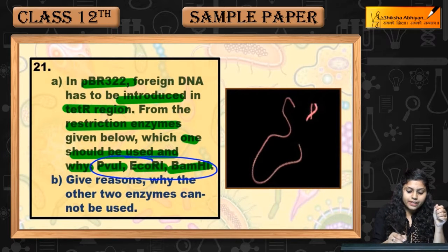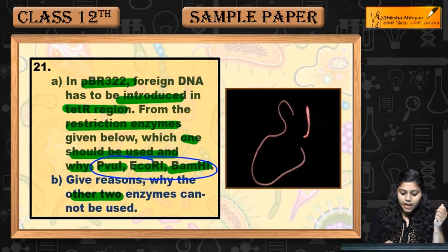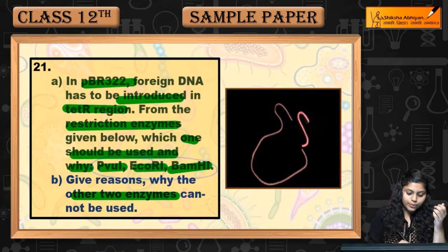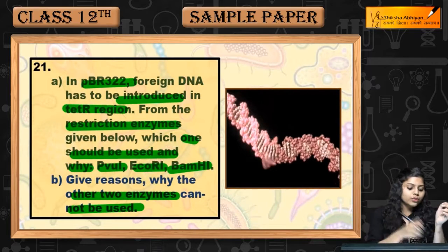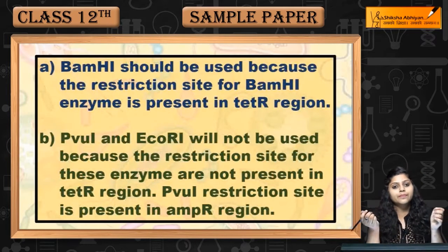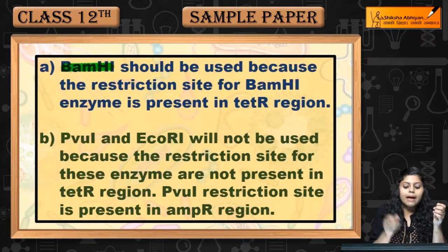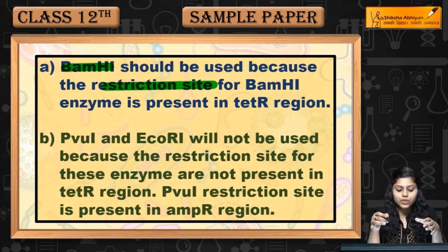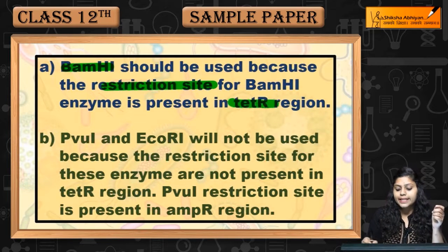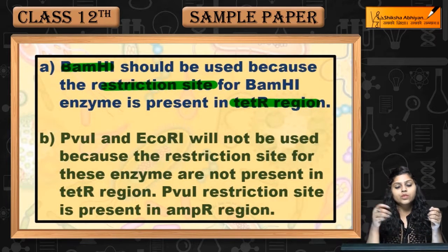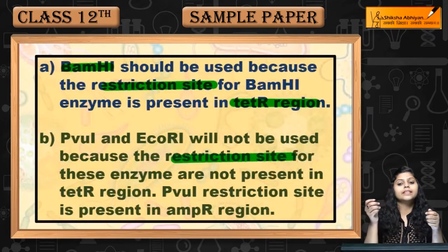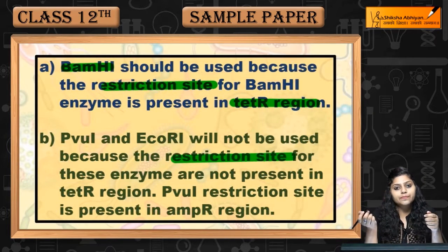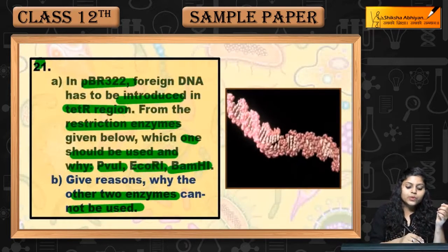Next part is: give reason why the other two enzymes cannot be used। इन तीनों में से कौन से enzyme use होगा वो बताना है और बाकी दो क्यों use नहीं होंगे। Answer है — BamHI use होगा, because जो restriction site है BamHI की, वो present होती है tetR region में। बाकी दो use नहीं होंगे क्योंकि उनकी restriction site वहाँ पर नहीं है।